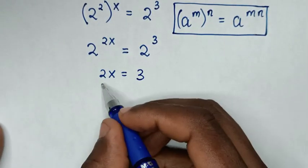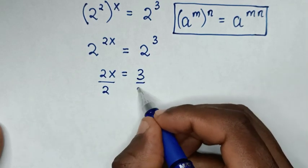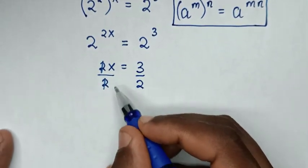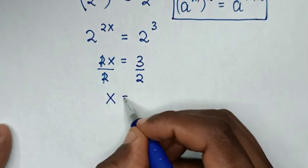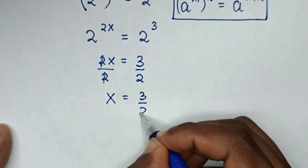Then from here, we'll divide by 2 in both sides, so this and this will cancel, then it will be x is equal to 3 over 2.